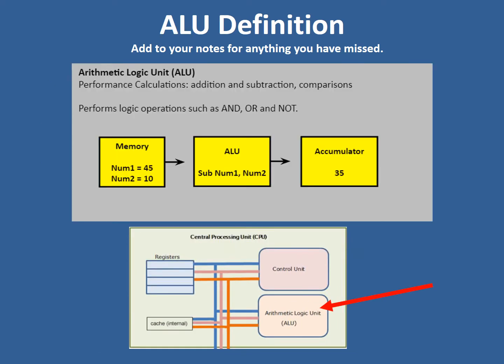The ALU is the Arithmetic Logic Unit, and this is the main place which performs calculations such as additions, subtractions, comparisons and binary shifts. We'll find out more about those later in the course. It also performs Boolean operators — logical operators such as AND, OR, and NOT.